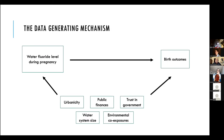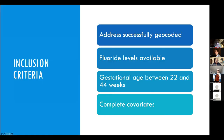We determined that water fluoride levels are likely to be a function of urbanicity, the size of the water system, environmental co-exposures such as ambient temperature, public finances, and trust in government. Once we linked the birth and fluoride records, we included any births where the parent's address was able to be geocoded, where the fluoride levels were available, and the outcome variables and co-variates had non-missing values.